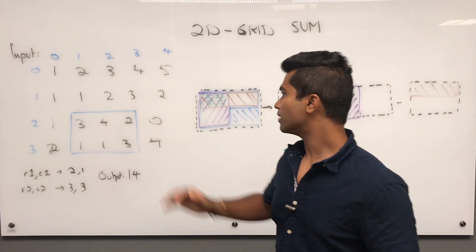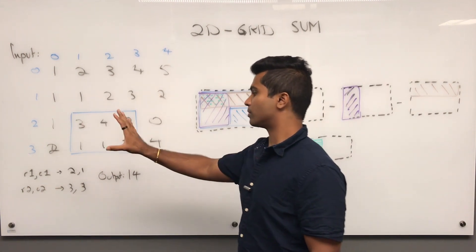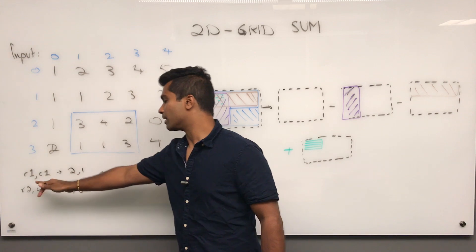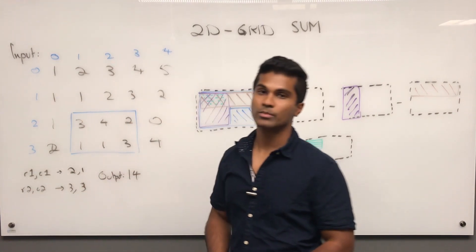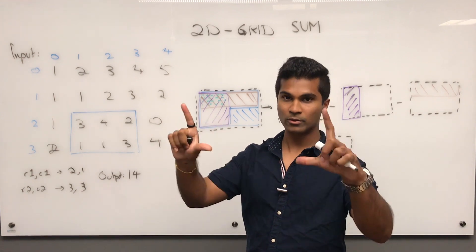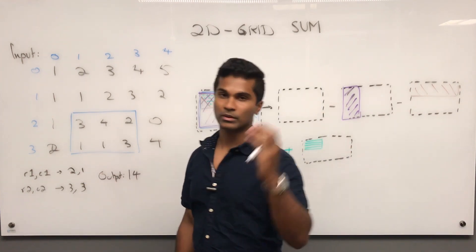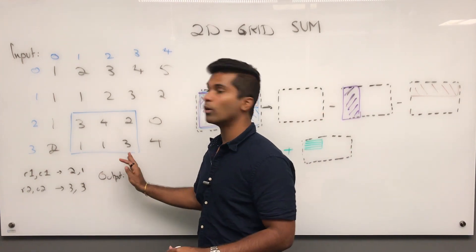Now the input is going to be a 2D grid of numbers and they're going to give a row and a column and another row and a column. These are going to be representing a rectangle with the first one being the upper left and the second one being the lower right.